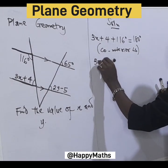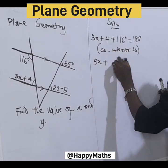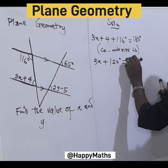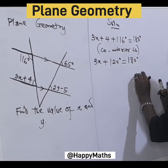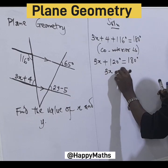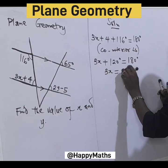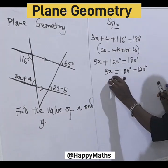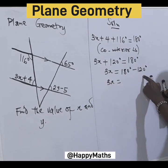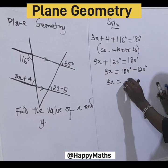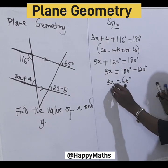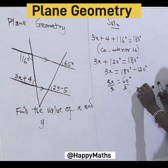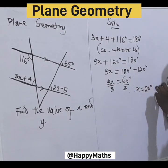This gives us 3x + 4 + 116 = 120, so 3x + 120° = 180°. Let's transpose. 3x = 180° - 120° = 60°. Dividing both sides by 3, therefore x = 20°.